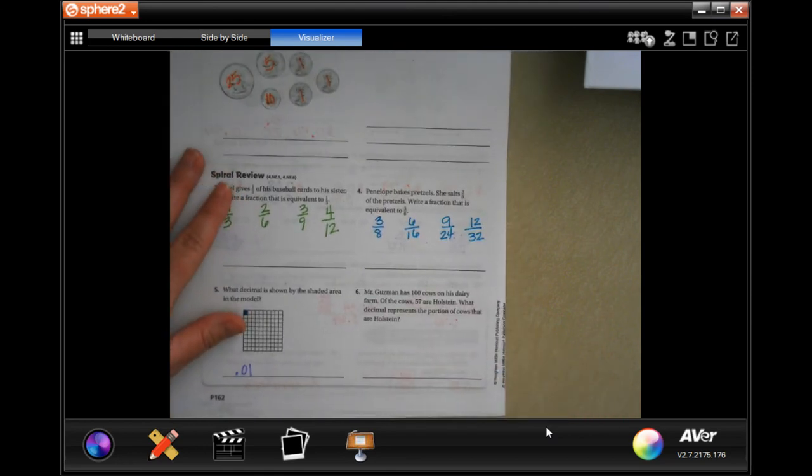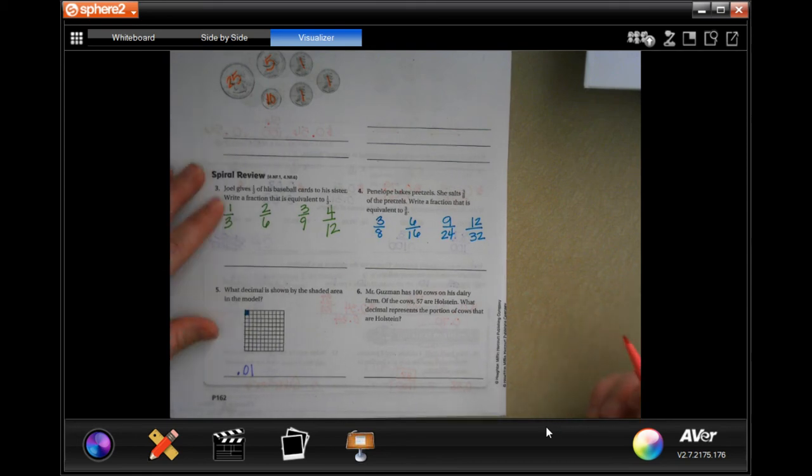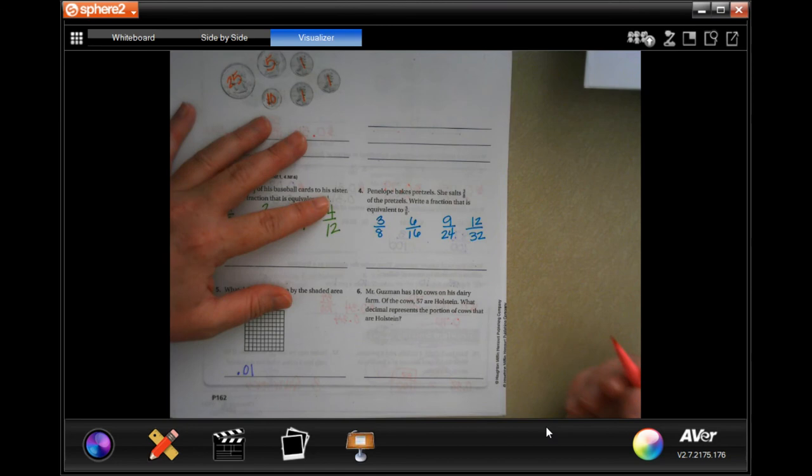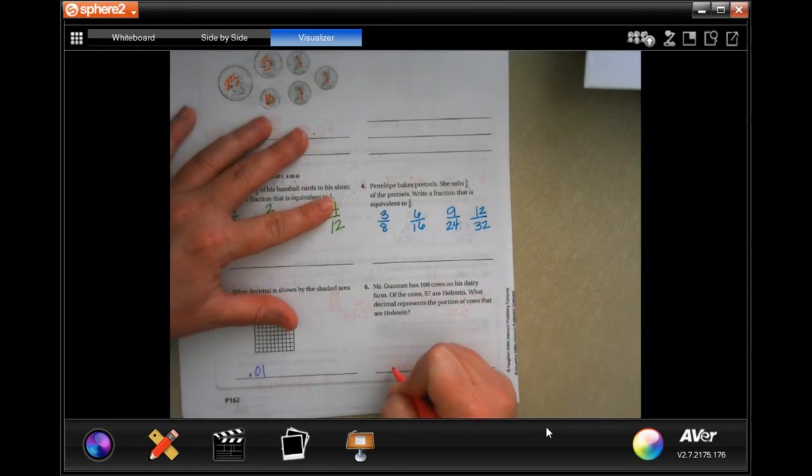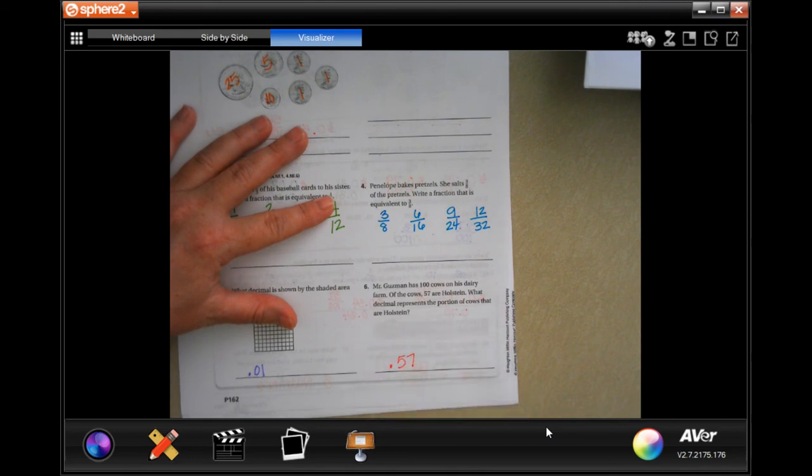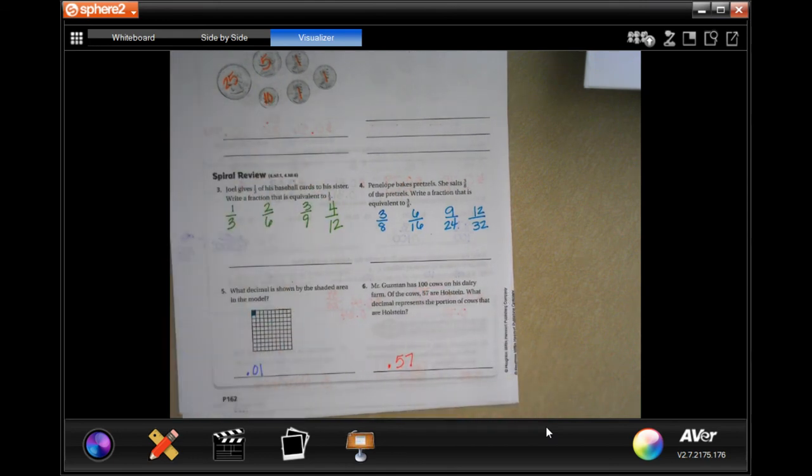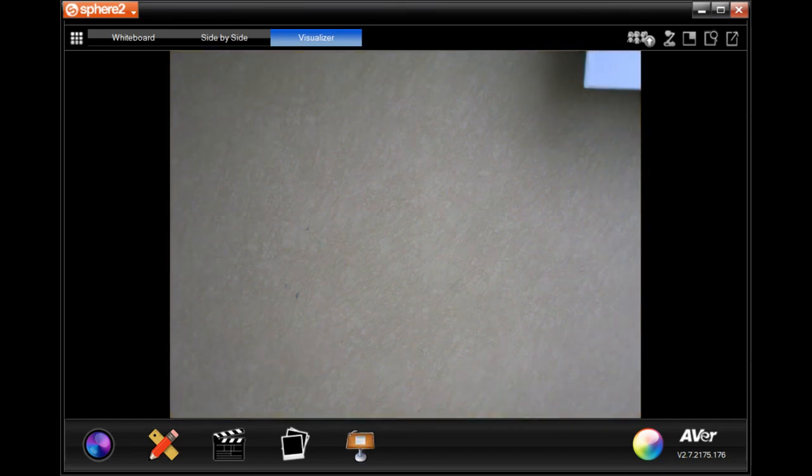Mr. Guzman has a hundred cows in his dairy farm. Of the cows, 57 are Holstein. What is the decimal that represents the portion of cows that are Holstein? Well, if we just put a decimal and then put five, seven, that seven is in the hundredth spot. And there's a hundred cows. So, that's it, guys. Thanks for hanging out for 9.4. Come on back for 9.5 soon. See ya.